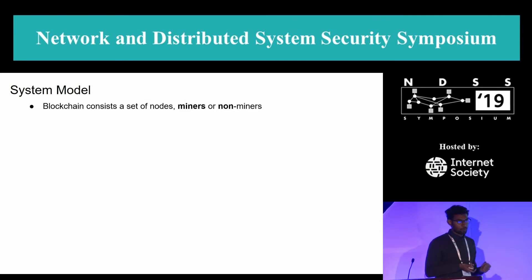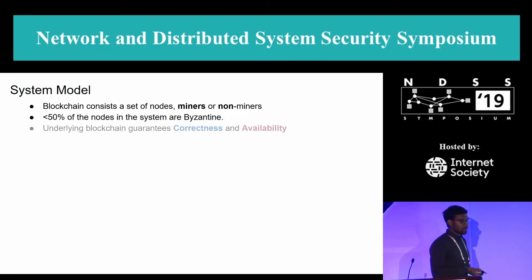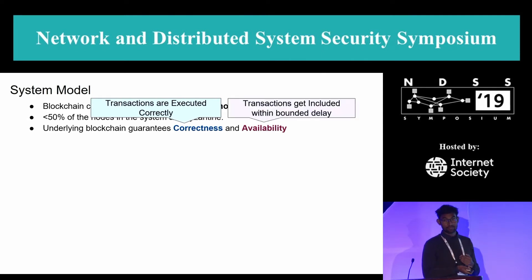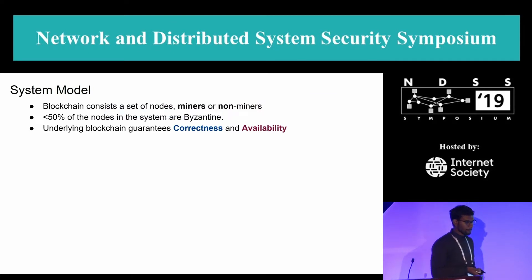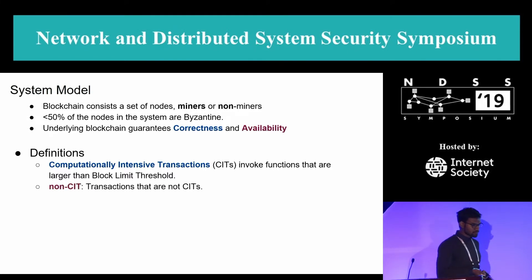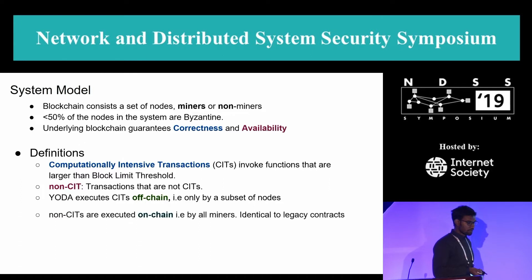In the system model, the blockchain consists of nodes that are either miners or non-miners. We assume at most 50% of nodes are Byzantine, and that the underlying blockchain guarantees correctness and availability. We define computationally intensive transactions (CITs) as transactions invoking functions requiring larger computations. All other transactions are non-CITs. Yoda executes CITs off-chain — by only a subset of nodes — while non-CITs are executed on-chain in the legacy manner.